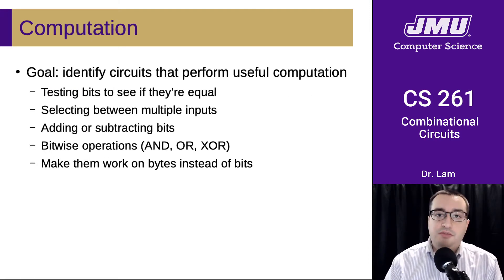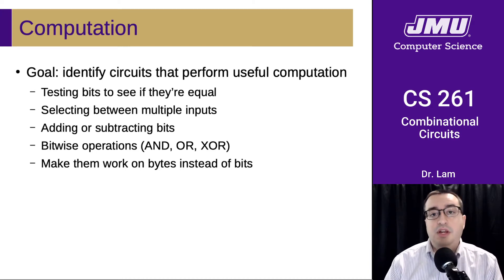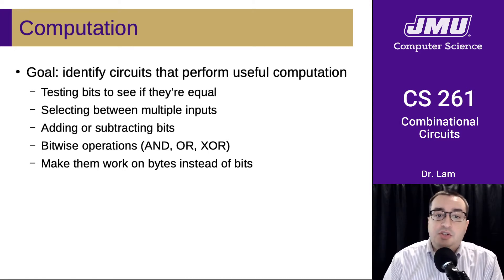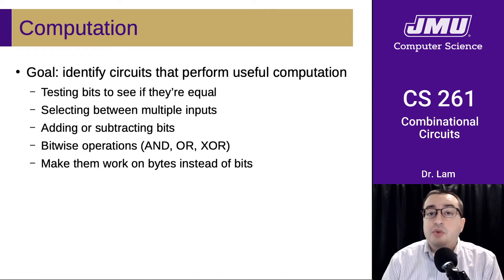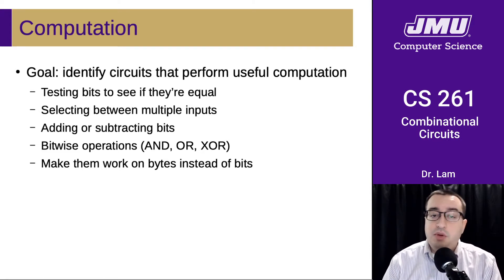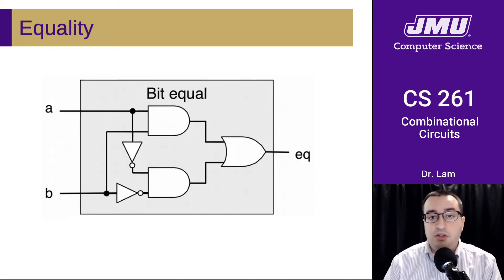The goal is to identify some circuits that perform useful computation — things like testing bits to see if they're equal, selecting between multiple inputs, adding, subtracting, doing bitwise operations, and then gradually moving up and making them work on larger pieces of data. There are obviously going to be other useful things, but I just want to show you a few of them. Hopefully this will convince you that we can build up all the things we need for general purpose computation using just these basic logic gates put into circuits.